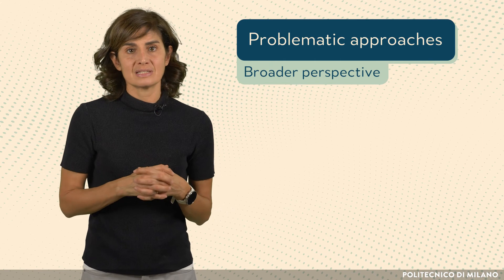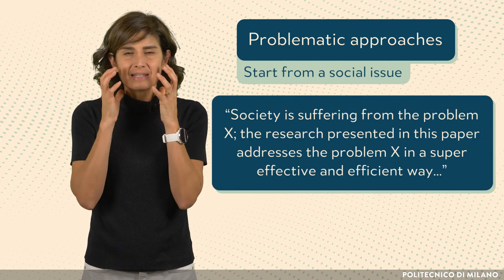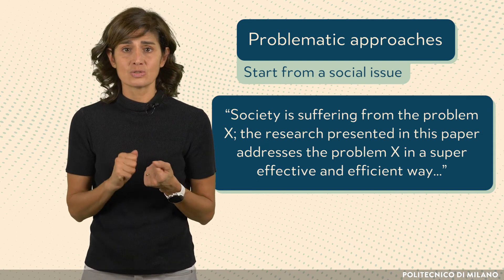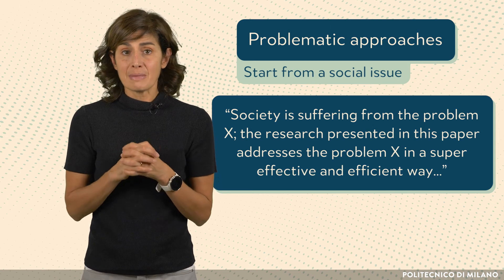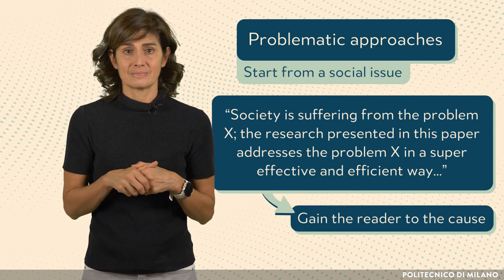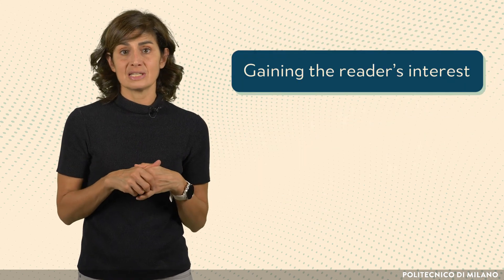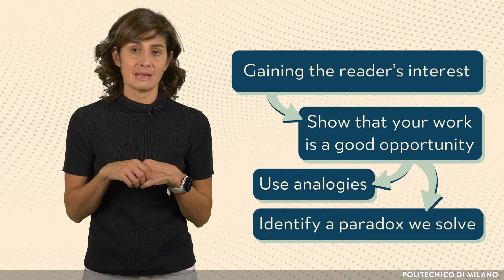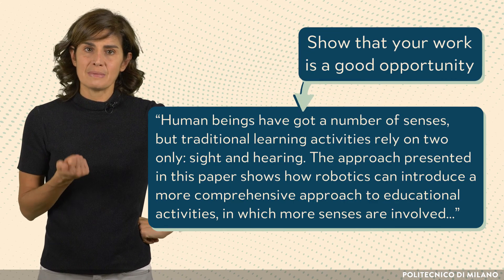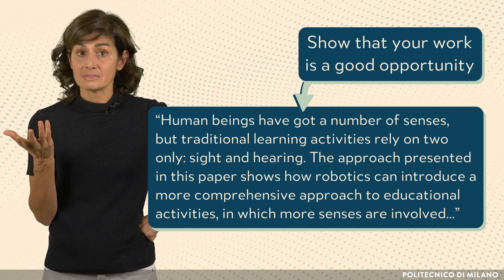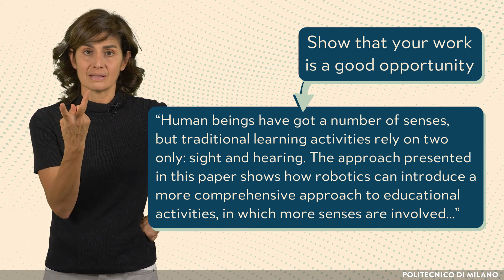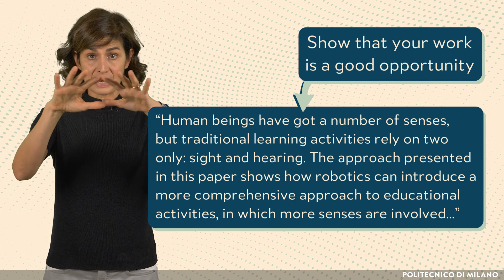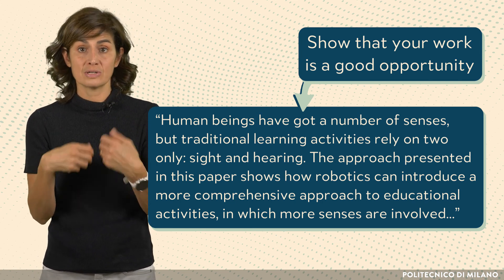If you want to take a broader perspective, you can start from a social issue — something like: 'Society is suffering from problem X. The research presented in this paper addresses problem X in a super effective and efficient way.' Problematic approaches are meant to gain the reader to the cause. Another way of gaining the reader's interest is by showing that your work is a good opportunity — for example via an analogy or by identifying a paradox. For instance: 'Human beings have got a number of senses, but traditional learning activities rely on two only — sight and hearing. The approach presented in this paper shows how robotics can introduce a more comprehensive approach to educational activities in which more senses are involved.'